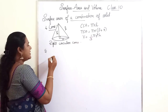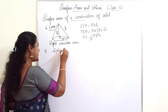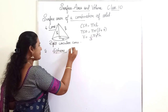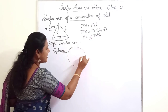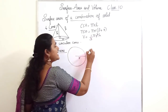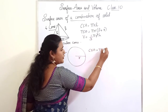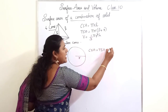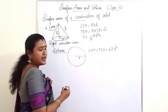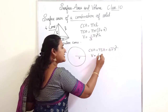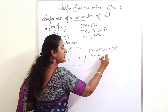Now we will go to the next solid: sphere. If the radius of the sphere is R, then CSA and TSA are the same for a sphere, and the formula is 4πR². The volume of a sphere is (4/3)πR³.